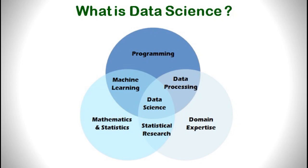As you can see in the diagram, data science is an interdisciplinary area that requires mathematics and statistics, programming and databases, domain expertise, and machine learning. I will explain each dimension of data science one by one.